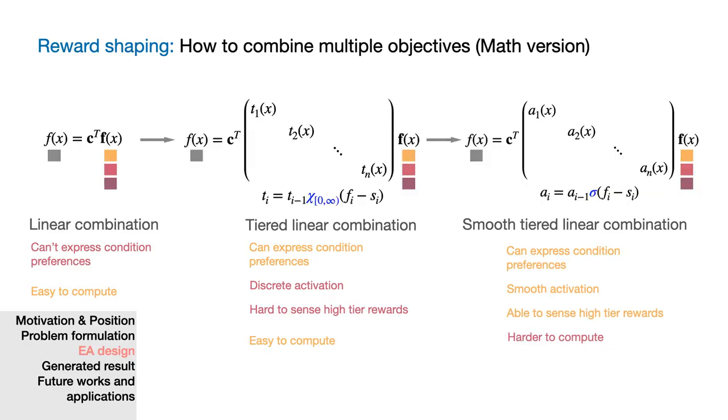And this is the corresponding mathematical formulation. Notice that in the middle, the tiered linear combination is achieved by applying a diagonal matrix, which functions as a pointwise multiplication. The T_i's are either 0 or 1, depending on whether a previous tier satisfaction had met a certain threshold, which is represented by S_i.